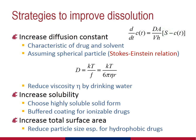Another strategy we can use is to increase the solubility of the drug — in other words, increase the value of S. One way to do this is, in the case of ionizable drugs, to use the most highly soluble form of that drug. Generally, this will be the charged form. For an acid, this will be the conjugate base, and for a basic drug, this will be the conjugate acid.